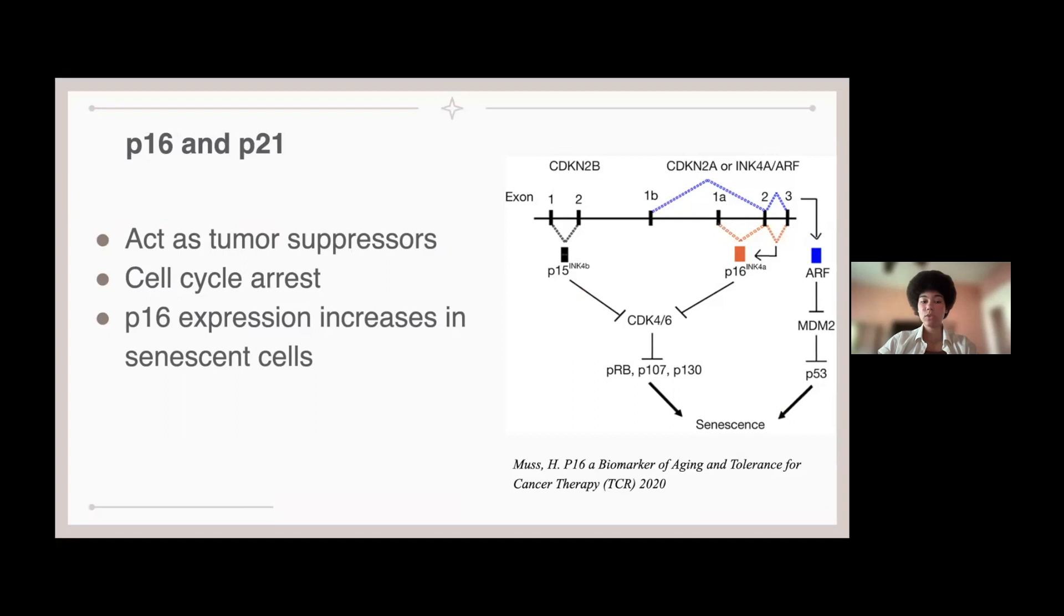Similarly, P21 suppresses CDK2 cycling E activity, and this can be simulated by P53 to inhibit the G1S and G2M transition, which results in G1 and G2 arrest.